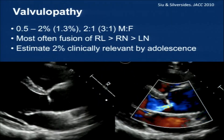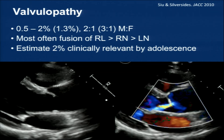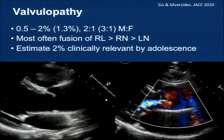As a valvulopathy, bicuspid means two — and the story of two carries throughout. It's 0.5 to 2% of the population; I tell everybody it's 2% because that's easy to remember. It's a 2-to-1 male-to-female ratio. Most often it's the fusion of the right and left cusps, the intercoronary cusp, and roughly 2% of that 2% requires an intervention in the first two decades of life.